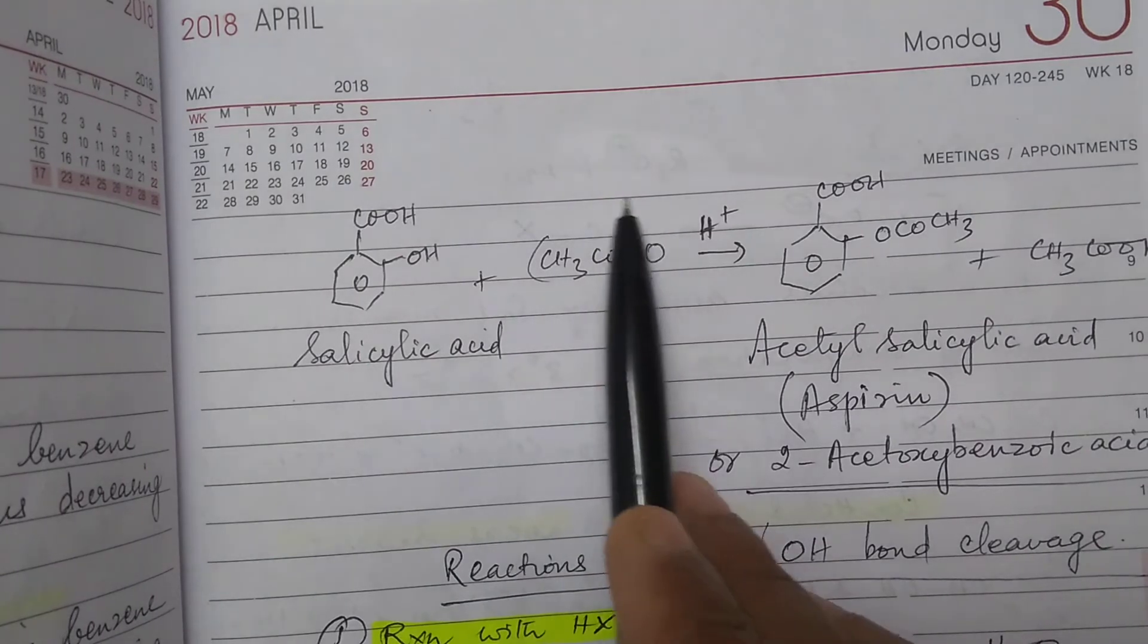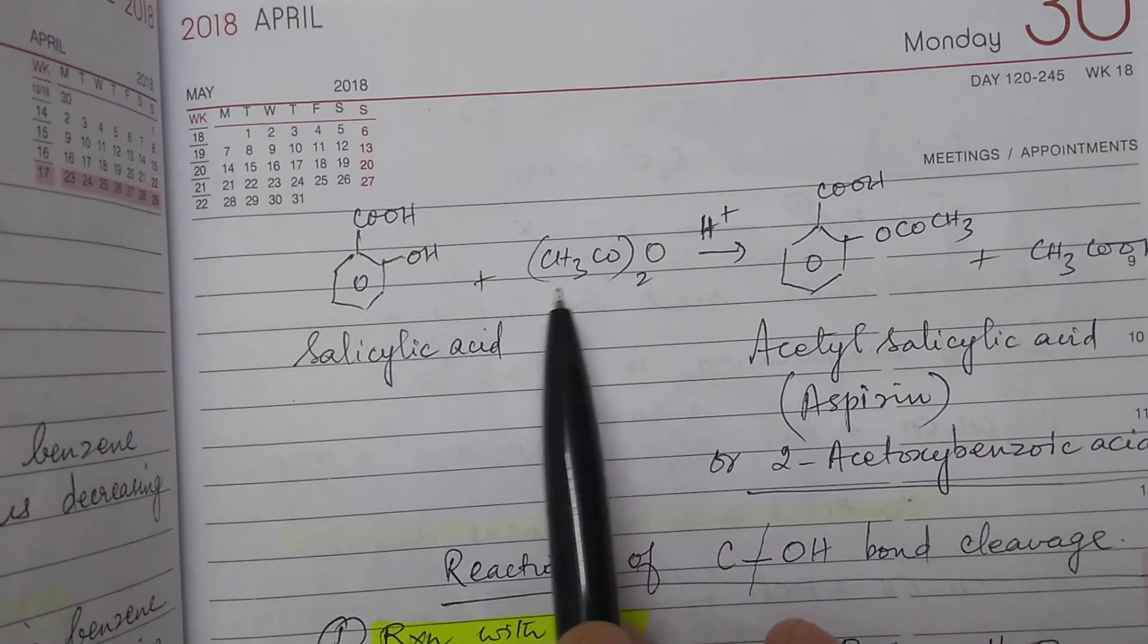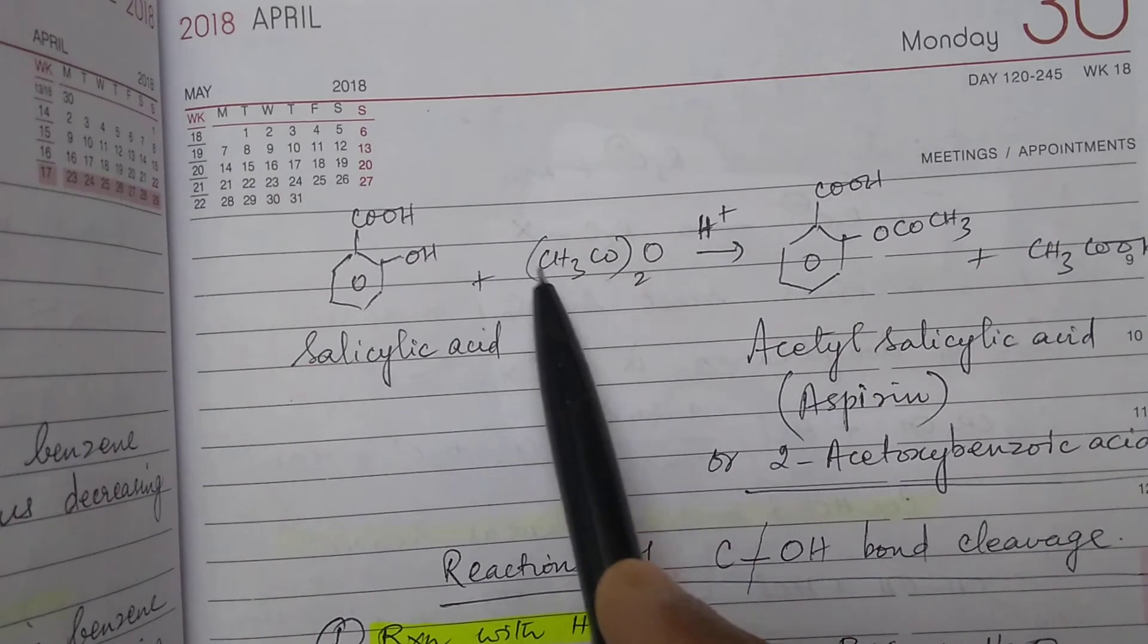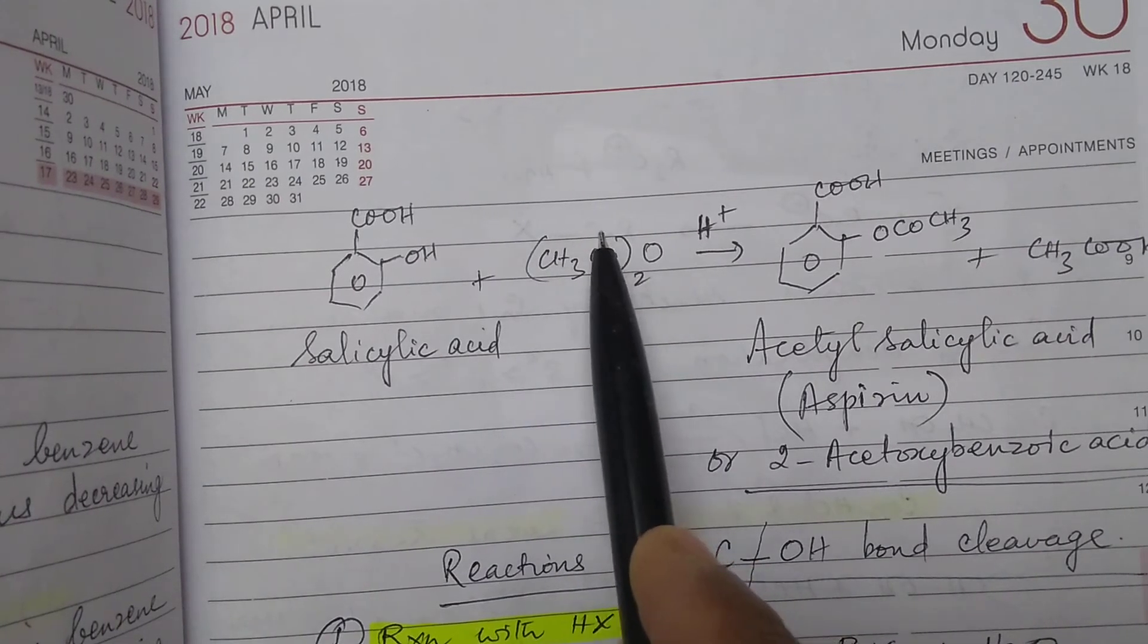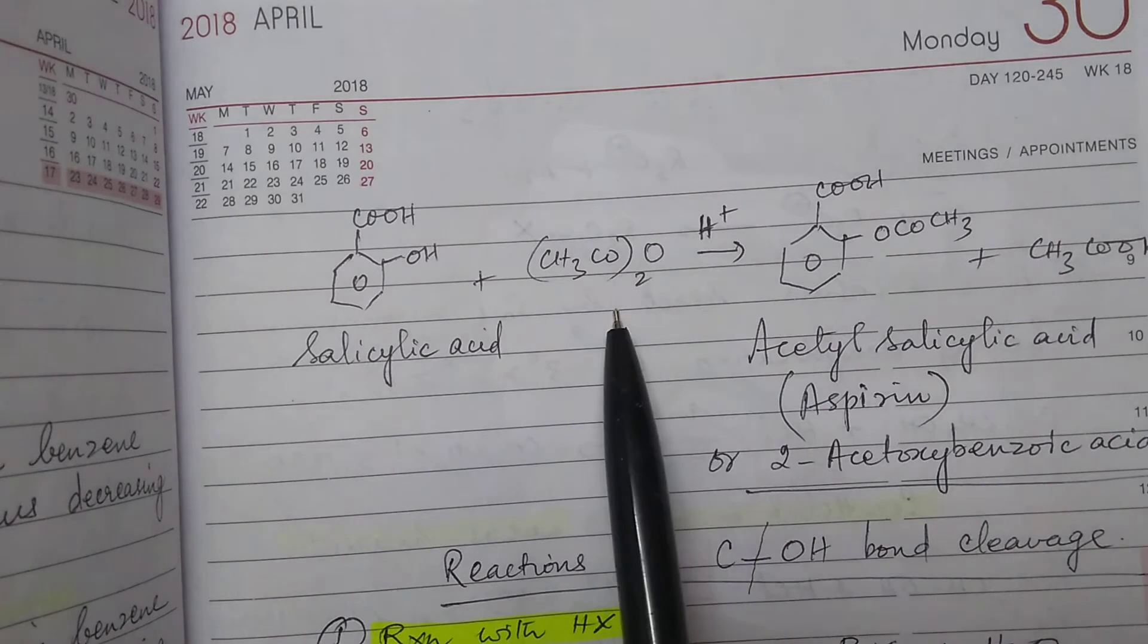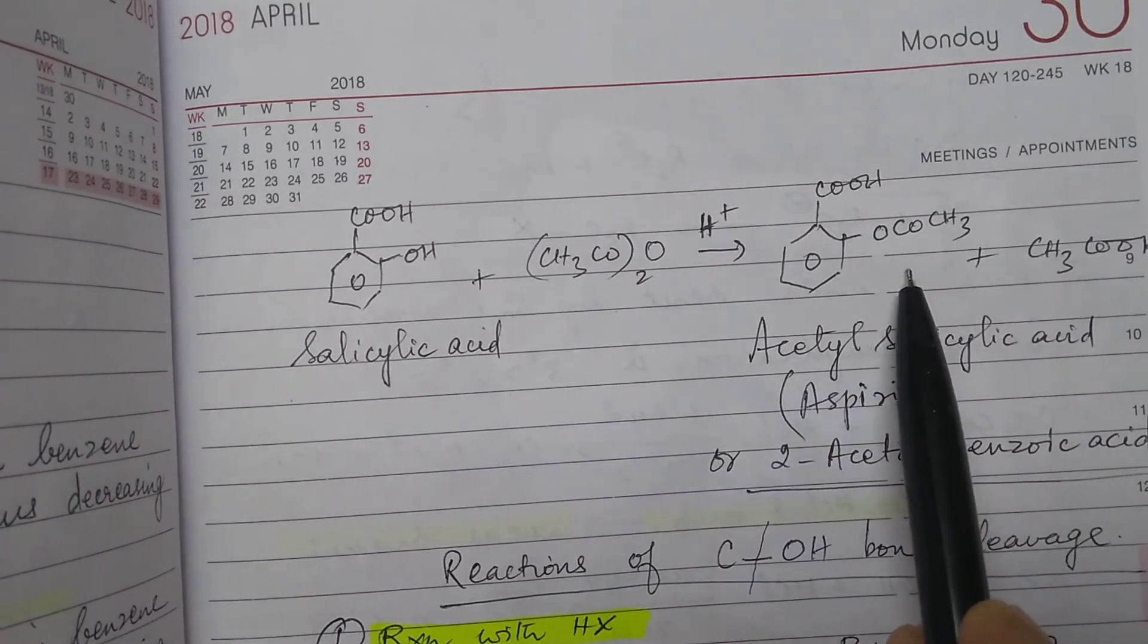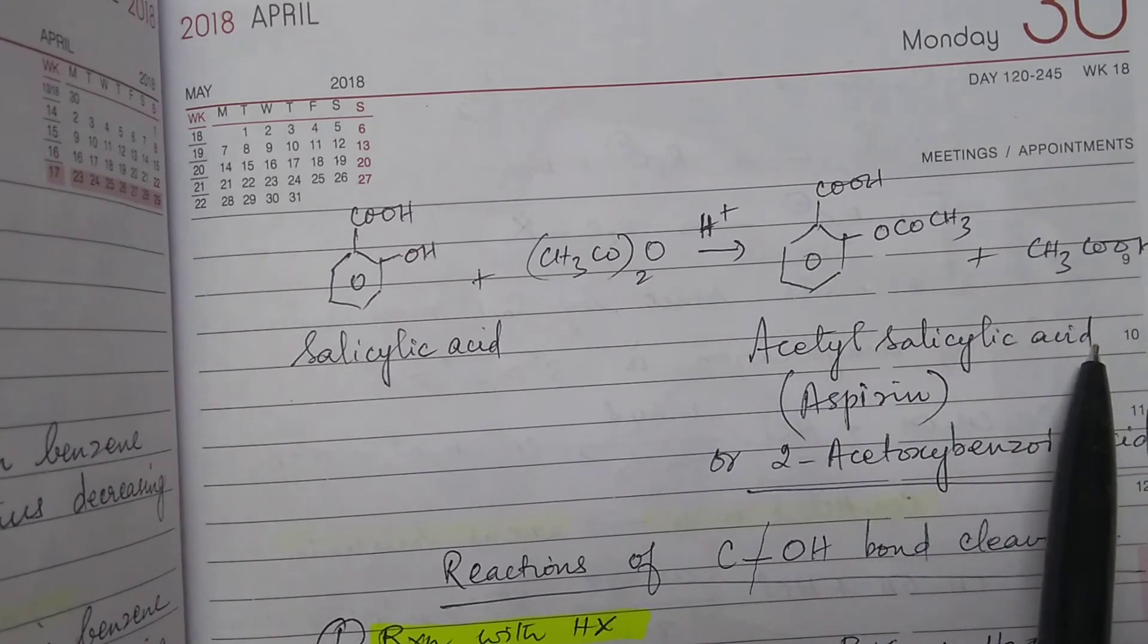When it is subjected to acylation—acylation is nothing but acetyl group getting added, this is called as acetyl group—in the presence of dilute acid then you get acetyl salicylic acid.